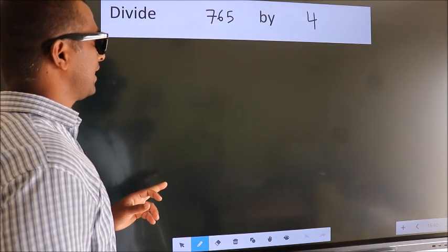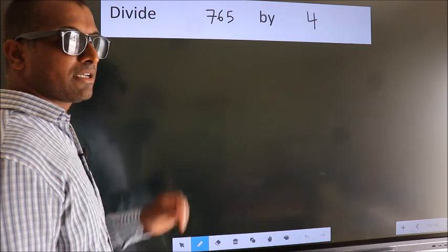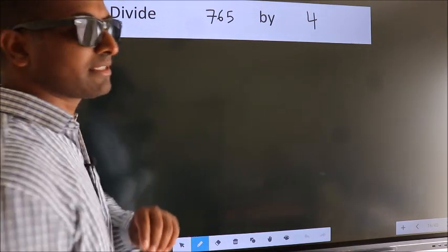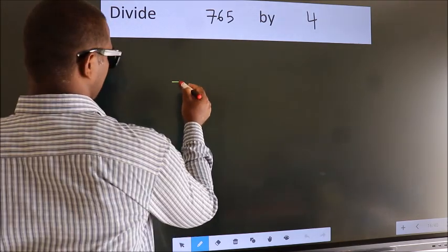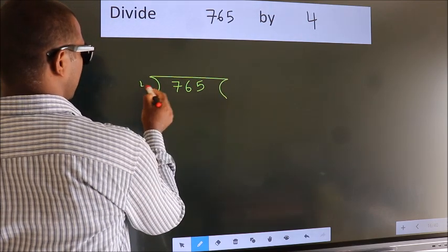Divide 765 by 4. To do this division, we should frame it in this way. 765 here, 4 here.